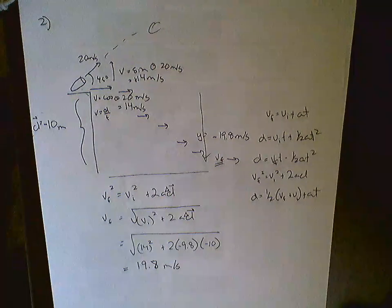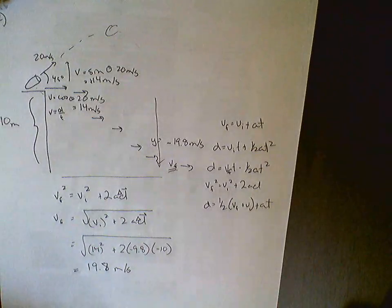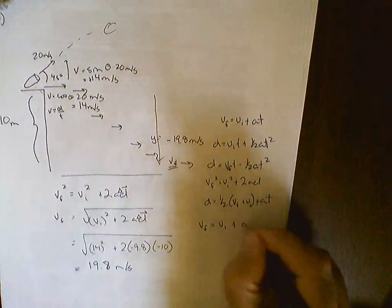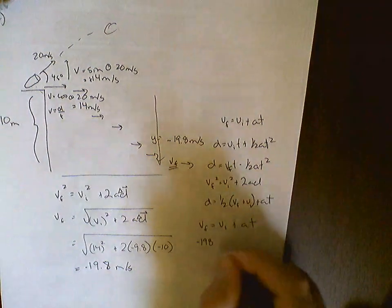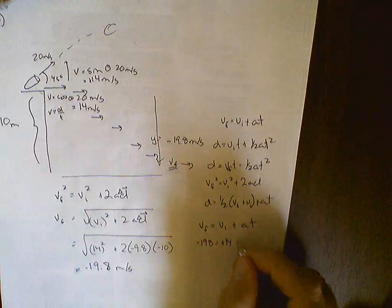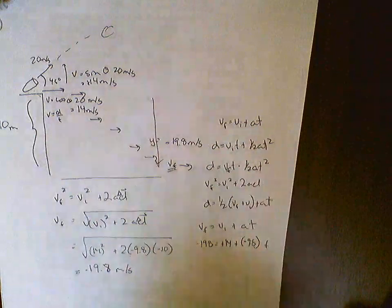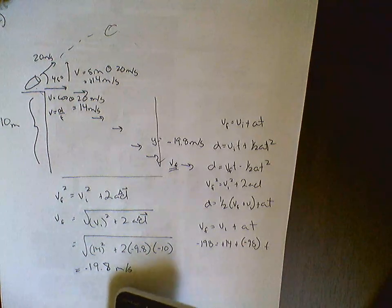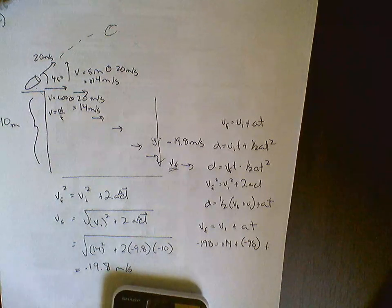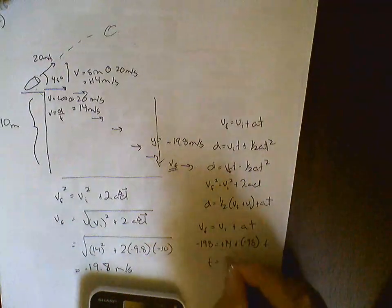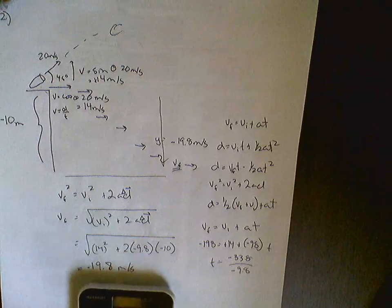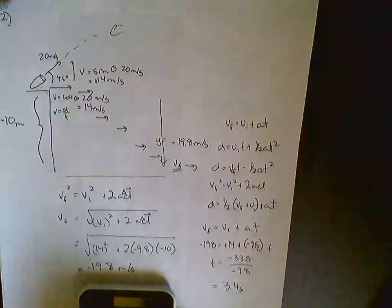Now that we know this, we could ask a question about how much time it took. So we can have a formula that has time, and once again we can use any formula that has time to answer this. I'm going to use VF equals VI plus AT. VF is negative 19.8, VI is positive 14, plus negative 9.8T. So negative 19.8, I'm going to bring the 14 over, so that's going to be minus 14. That's 33.8 divided by 9.8. My time for the entire trip is 3.4 seconds.